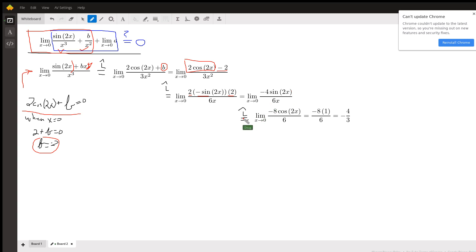I can apply L'Hôpital's rule again and I finally get the limit as x approaches zero of -8 cosine of 2x over 6. Now when I try direct substitution, I get -4/3. Okay, so the limit of this first expression is -4/3.